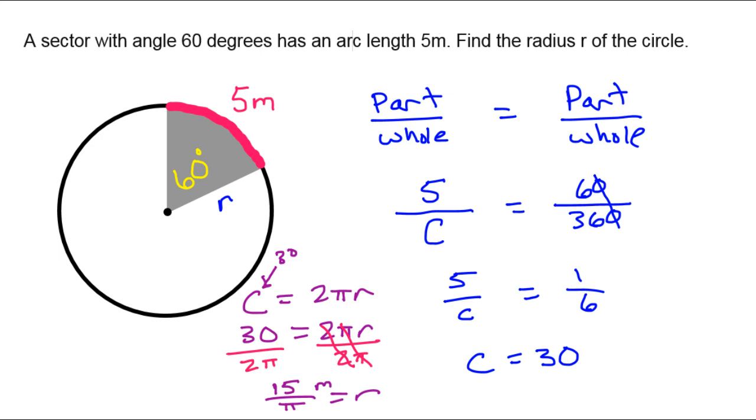15 divided by 3.1415 is about 4.7746. Okay, thanks Siri. That was very helpful. So that tells me that the radius is approximately 4.77. But 15 over π is the exact answer. 4.77 meters is the approximate answer.